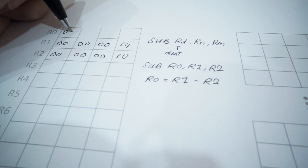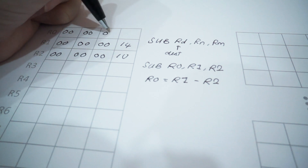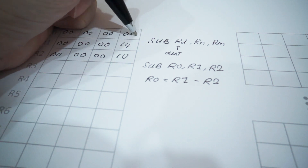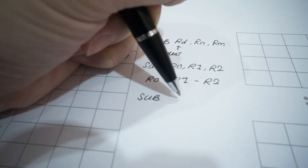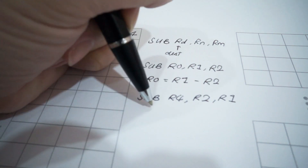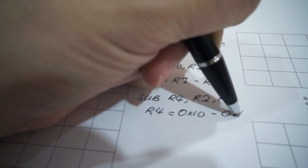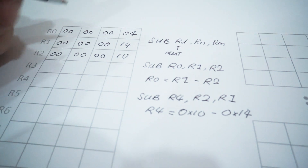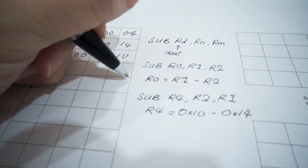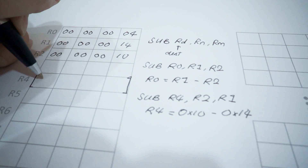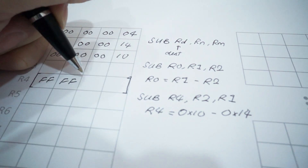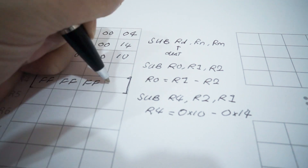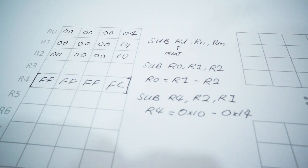The result will be 0x04 and it will be stored into R0. What if we are subtracting R1 from R2? If we execute the code in a simulator, it will return 0xFFFFFFFC and store it into register 4.